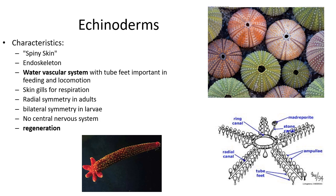Echinoderms also have a water vascular system — a bunch of tubes with water that they can compress to move around. They can secrete sticky substances to stick to or release from surfaces. They have gills for respiration, penta-radial or radial symmetry in adults, and bilateral larvae. They do not have a central nervous system — no brain. They can regenerate: if you cut a sea star's leg off, it can grow a whole new sea star as long as it gets the nutrients and has some of the central ring.